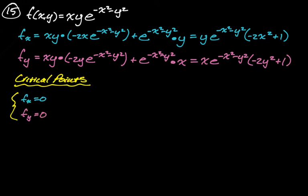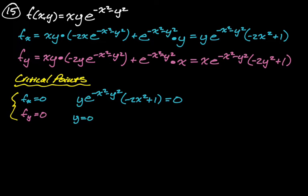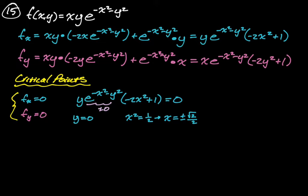To find critical points, we set partial_x and partial_y equal to 0. For partial_x = 0: y could equal 0, giving y = 0. The exponential e^(−x²−y²) can never equal 0, so it contributes nothing. Then −2x²+1 = 0 gives x² = 1/2, so x = ±√2/2. We get three things: y = 0, x = √2/2, and x = −√2/2.